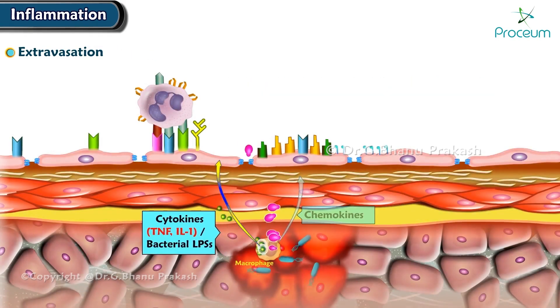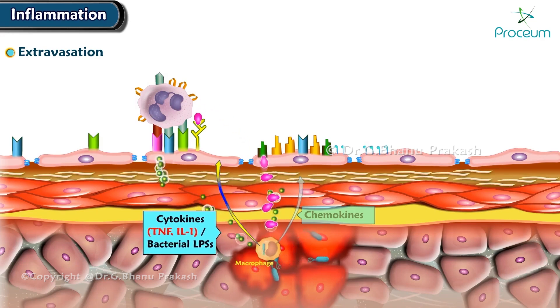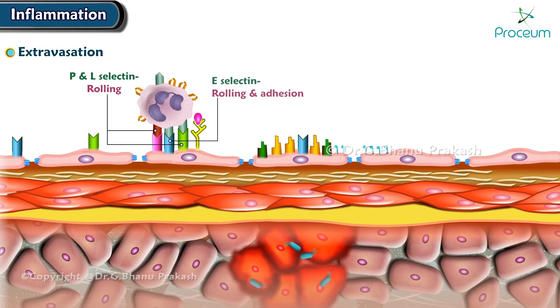TNF and IL-1 act on endothelial cells. P- and L-selectin are involved in rolling, while E-selectin plays a key role in both rolling and adhesion.